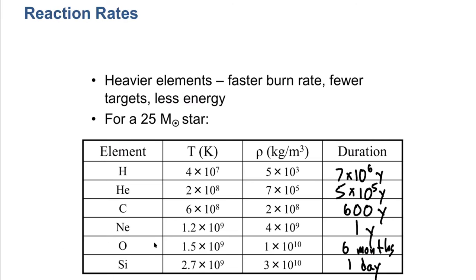If you have a higher mass star, all these numbers will be shorter; if you have a lower mass star, they'll be longer. But the point is that as you burn these successive elements, they last for shorter and shorter times because you're down to the pulp already — you have squeezed all of the juice out of the energy of the atoms in the centers of these stars.